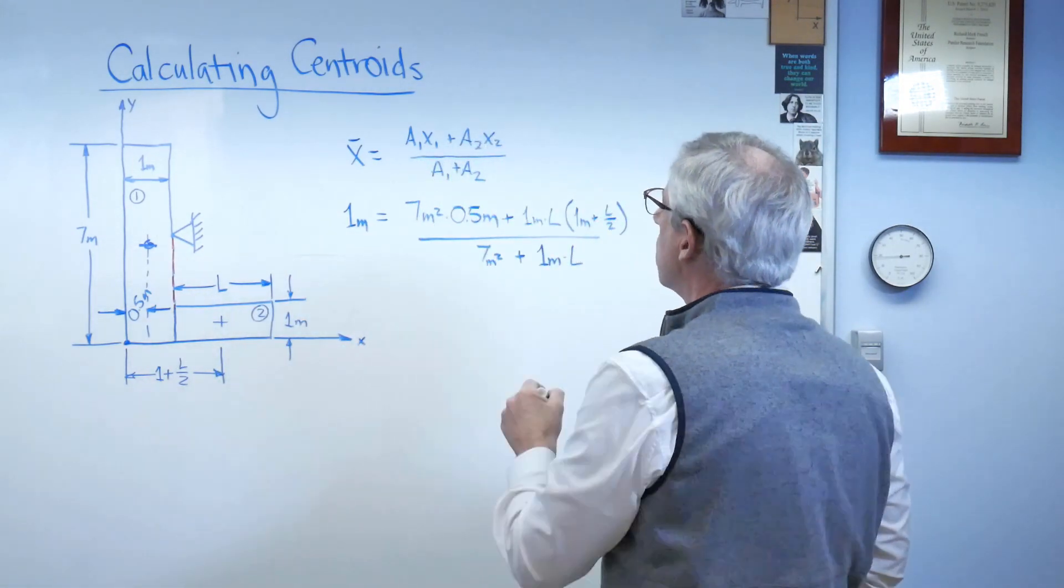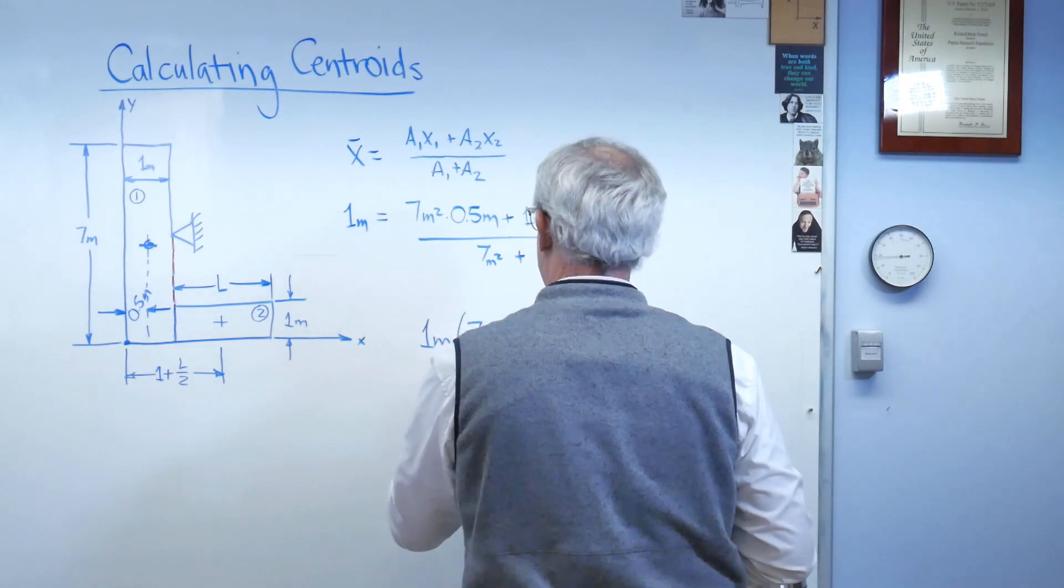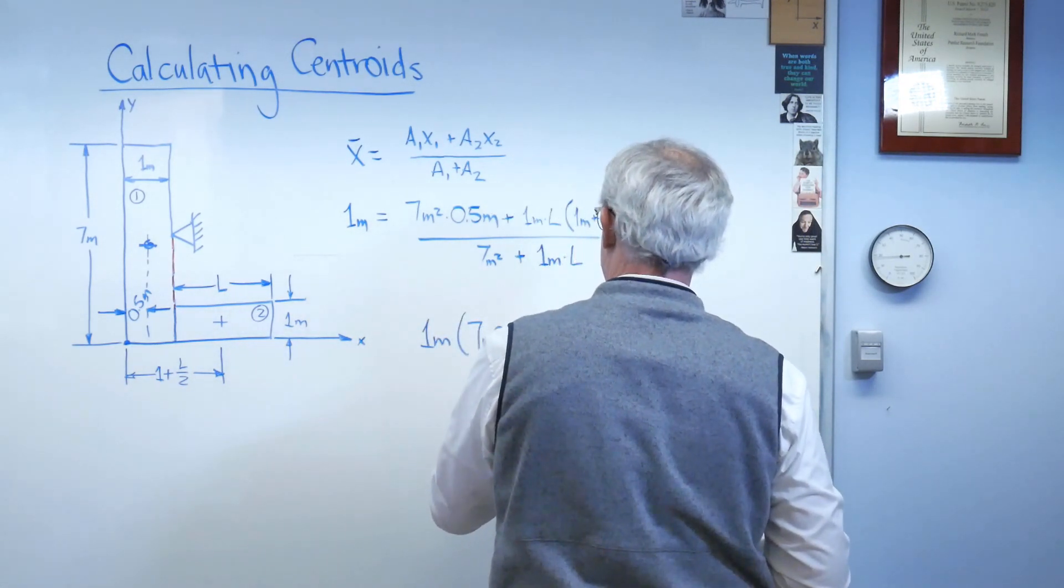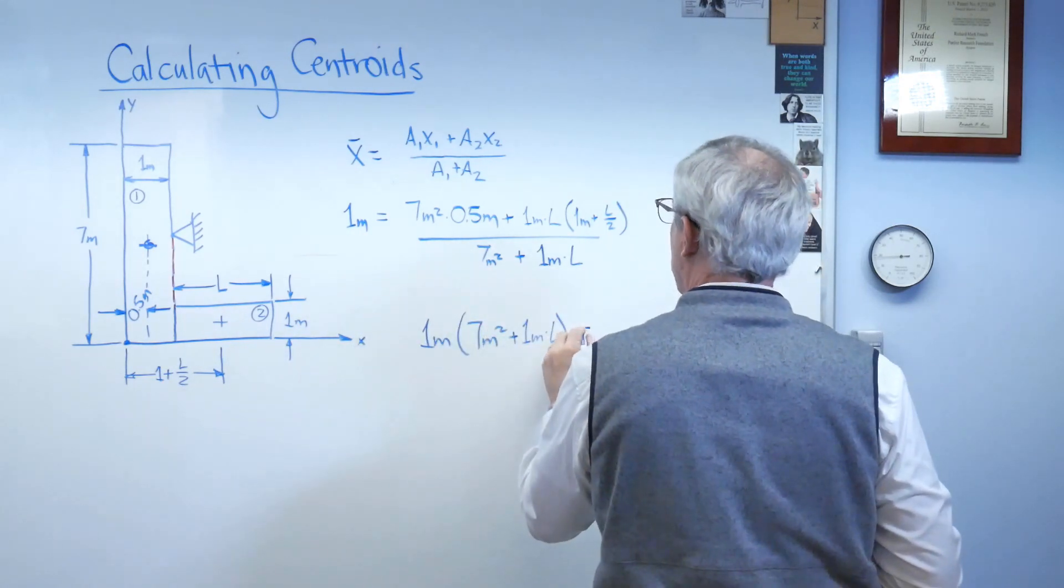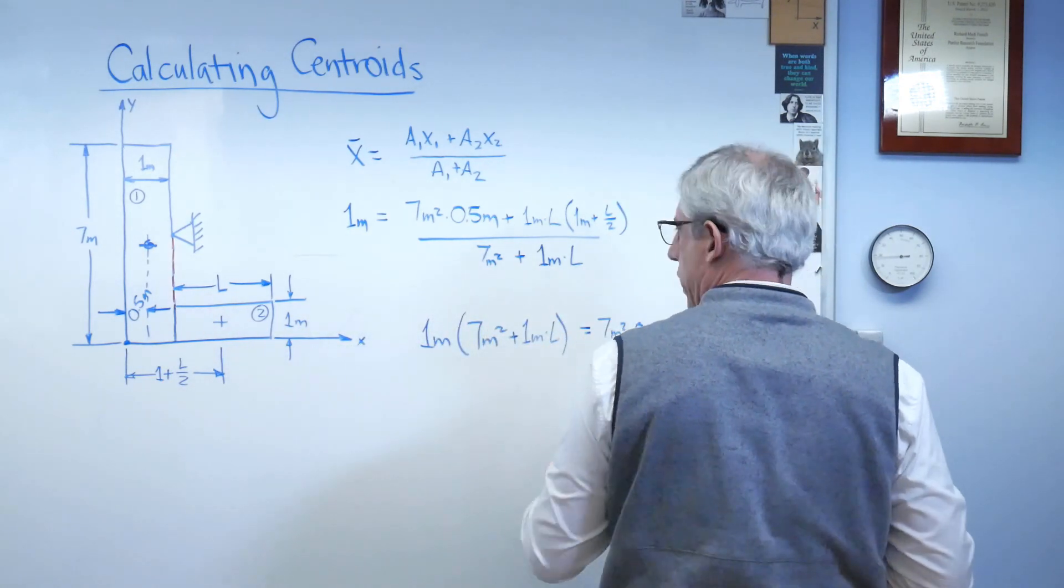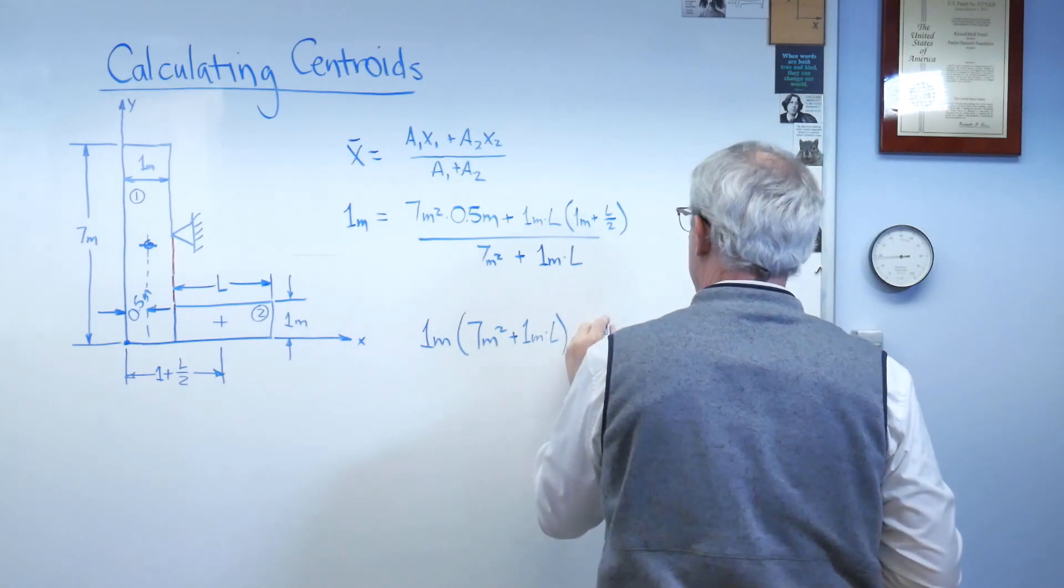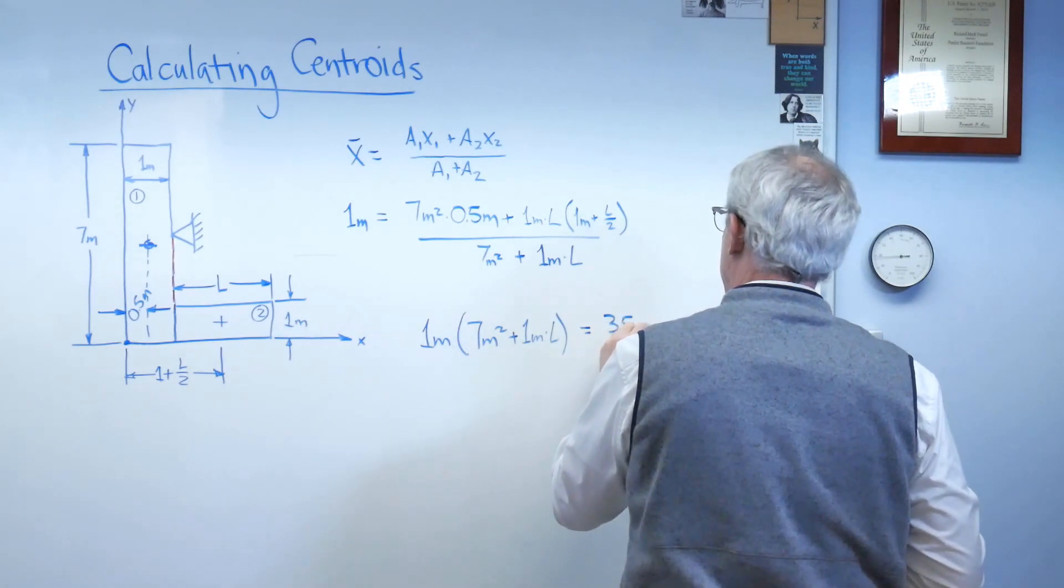Okay. Well, let's expand this out. There we go. I've multiplied through over there. Actually, I can expand this out a little bit. That's 3.5 meters cubed.